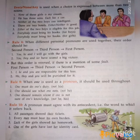But this order is reversed if there is a mention of fault. Then the order becomes first person, third person, second person. Examples: 'I, he and you are responsible for this loss.' 'We, they and you will be punished for it.'